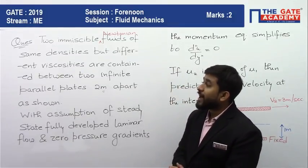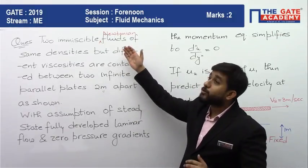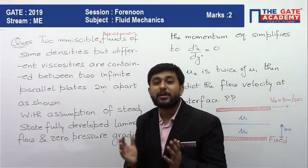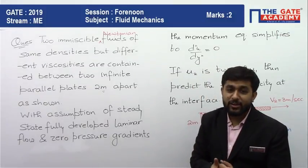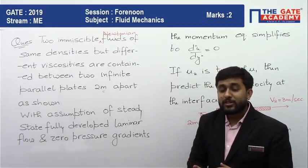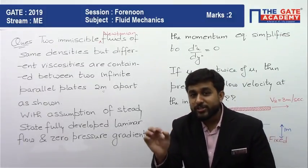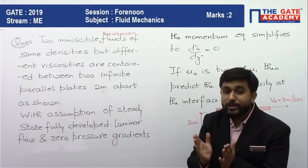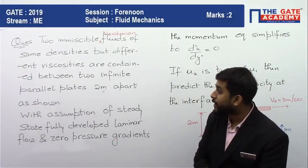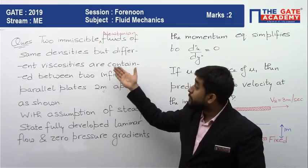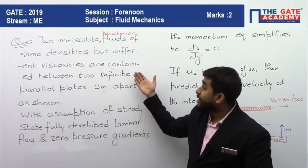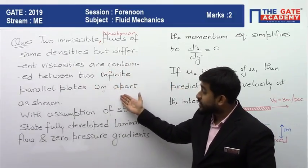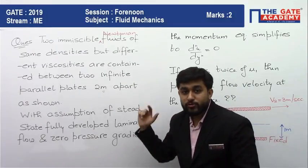What we have is two immiscible Newtonian fluids. Immiscible means they will not mix with each other, and Newtonian fluids means that shear stress at a point is equal to tau = mu · du/dy. These fluids are of the same densities but different viscosities, and are contained between two infinite parallel plates 2 meters apart.